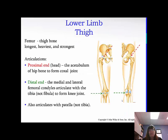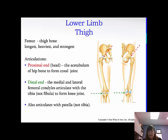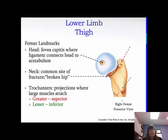The femur is your thigh bone — it's the longest, heaviest, and strongest bone in our body. The proximal end is the head, and the acetabulum of the hip bone form the coxal joint, so the head of the femur goes right into that acetabulum. Distally, you have the medial and lateral femoral condyles that articulate with the tibia — not the fibula — and form the knee joint. The tibia is the bone that forms the knee joint; the fibula is off to the side, the smaller thinner bone of the two. The femur also articulates with the patella. The fovea capitis is where the ligament connects the head to the acetabulum.